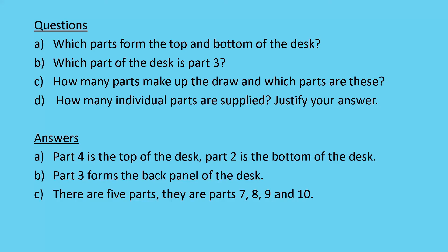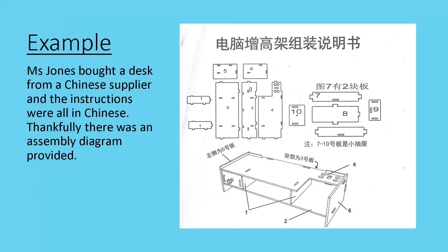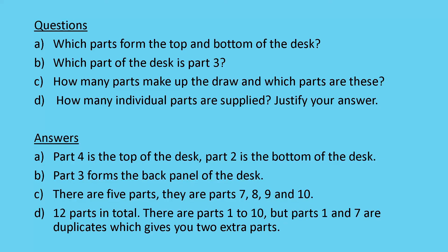Okay. Lastly, how many individual parts are supplied? And justify your answer. So, we can see that there are parts labeled 1 through to 10. Although, parts 1 and parts 7 are duplicated. Which means that there are 12 individual parts. Because parts 1 and 7 are duplicated. So, that gives you an extra 2 parts. So, in total, there are 12 parts.